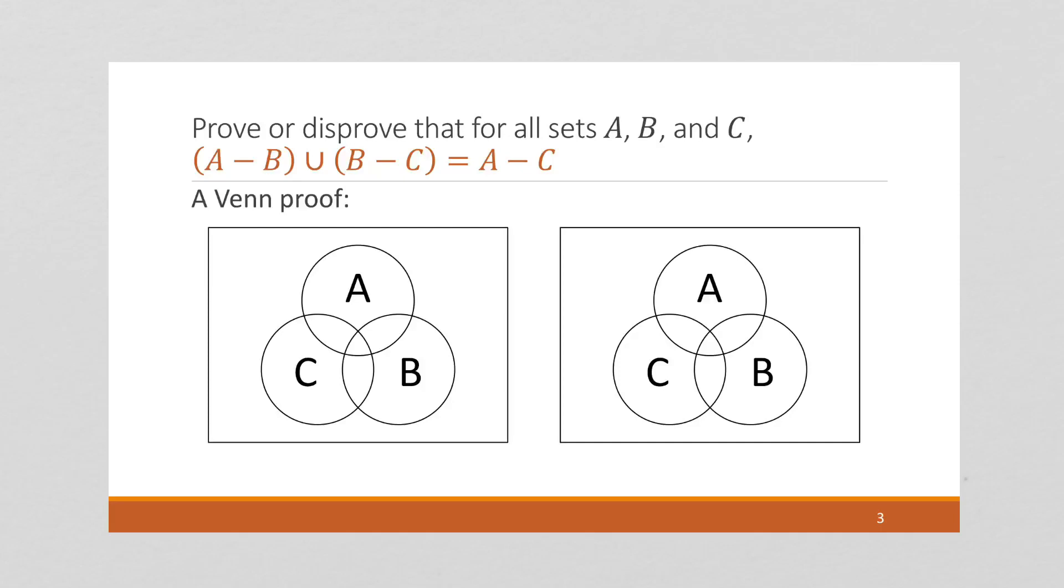Okay, so this is the equality we would like to prove: A minus B union B minus C is equal to A minus C. And I'm going to do a Venn proof, and I always find helpful with Venn proofs to do it by parts and to label it.